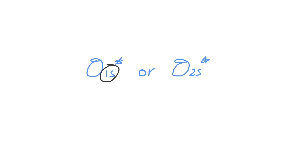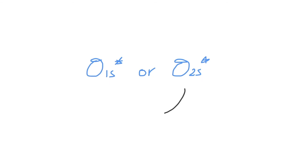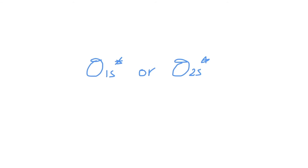The thing that is different here are the 1s and the 2s. On the left, there are two 1s atomic orbitals interacting to form the antibonding molecular orbital. However, on the right, there are two 2s atomic orbitals interacting to form this antibonding molecular orbital. Because 2s is higher in energy than 1s — since it has a higher principal quantum number n of 2 compared to 1 — the sigma 2s star antibonding molecular orbital is higher in energy than the sigma 1s star antibonding molecular orbital. Therefore, sigma 2s star has more nodes than sigma 1s star.